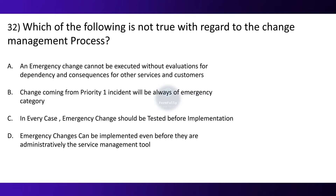Question 32. Which of the following is not true with regards to the change management process? Option A: An emergency change cannot be executed without evaluation for dependency and consequences for other services and customers. Option B: Change coming from a Priority 1 incident will always be of emergency category. Option C: In every case, emergency change should be tested before implementation. Option D: Emergency changes can be implemented even before they are administratively logged in the service management tool. The correct option is D.